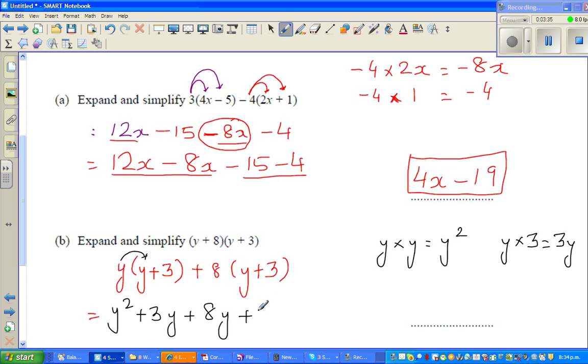This is 3 lots of y plus 8 lots of y. These two can't be simplified, so y squared will remain y squared. This is 11y plus 24, and this is the answer. Can we do one more? Expand this. This is pretty easy.